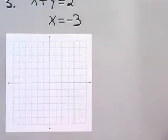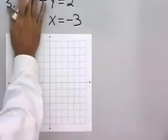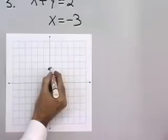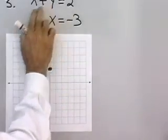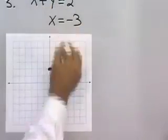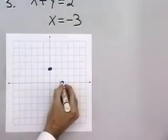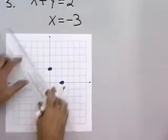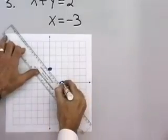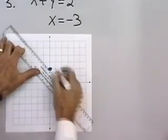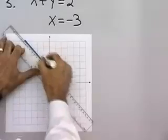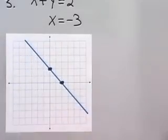Let's try one more. x plus y is equal to 2. When x is 0, y is equal to 2. And when y is equal to 0, x is equal to 2. Those are my intercepts for that equation. Let's draw a line between them.